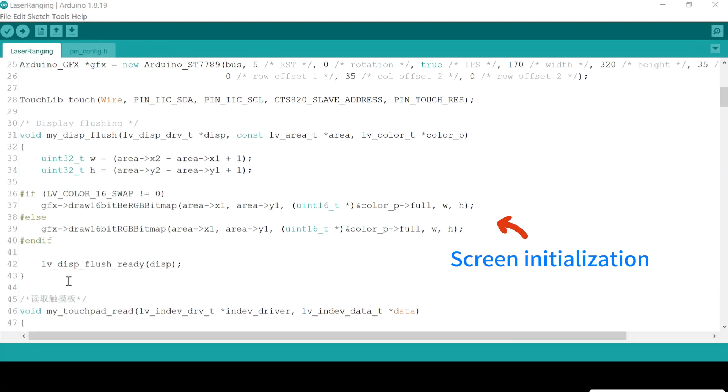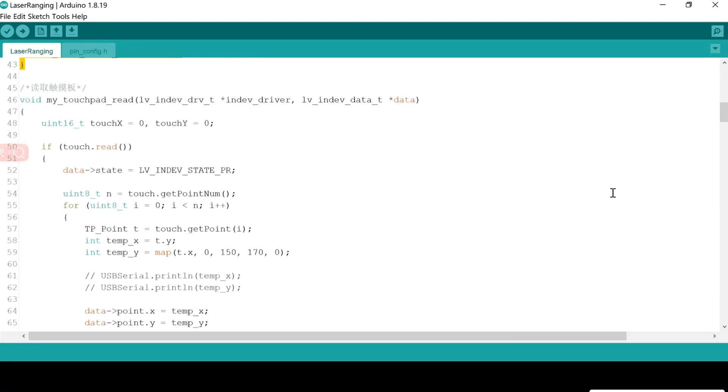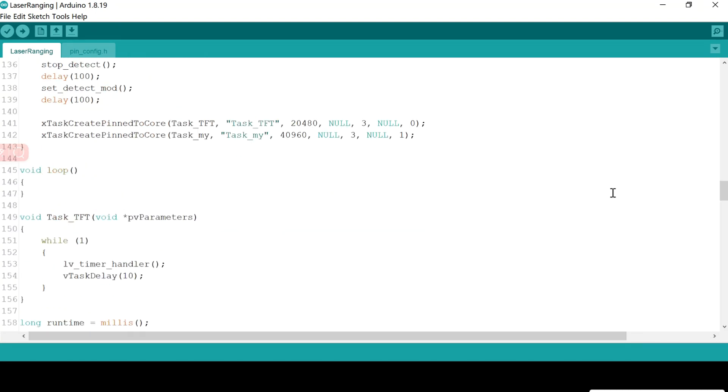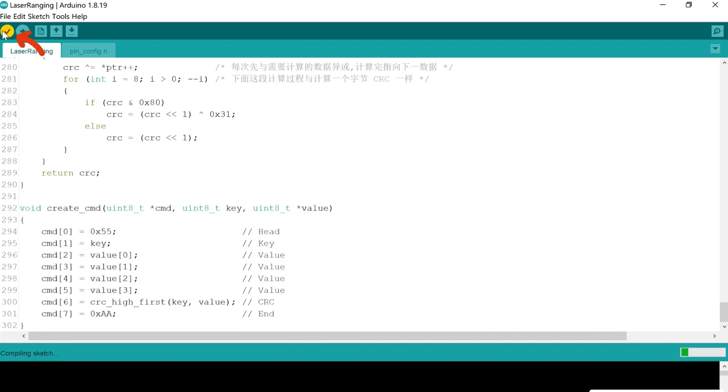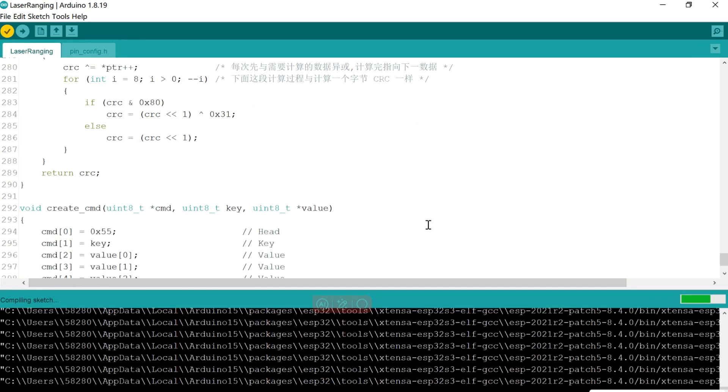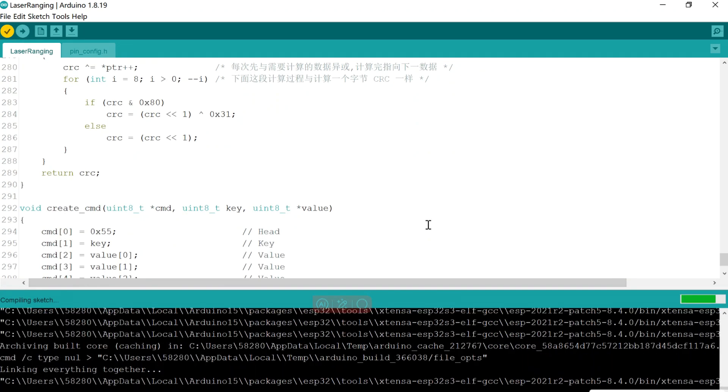Open Arduino, add the SquareLine output library file to the Arduino library file, and then add the code update for the laser range. Upload it to the screen, and you can interact with the screen. Update completed.